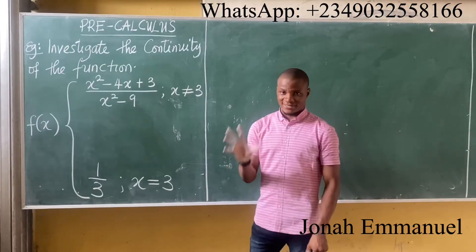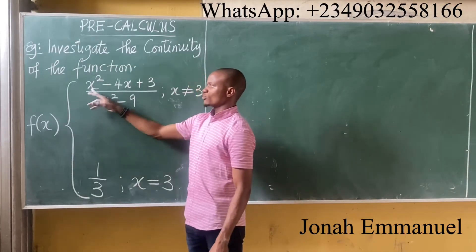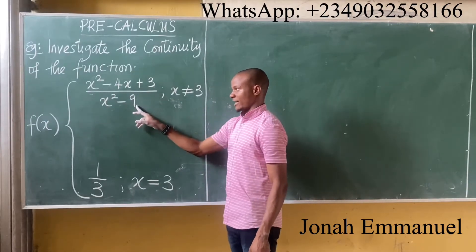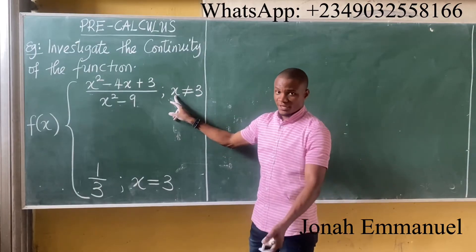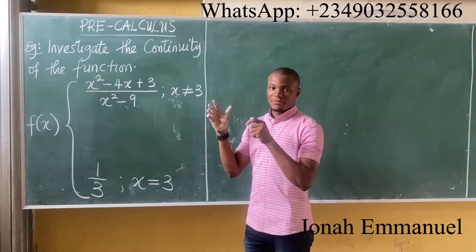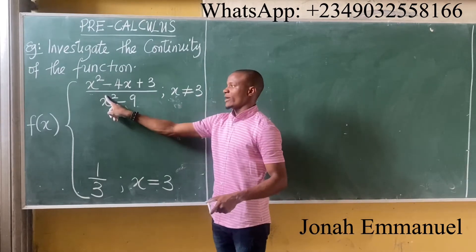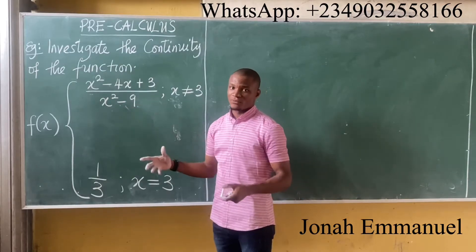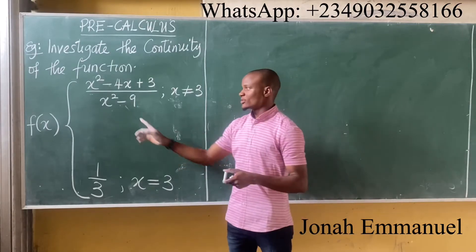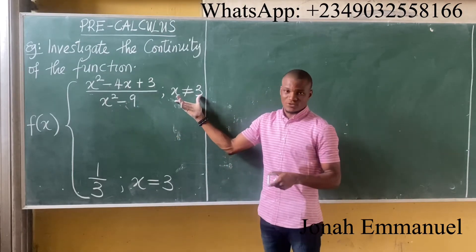For this one, f(x) equals x² minus 4x plus 3, all over x² minus 9, at x not equal to 3. This is intentional because if we put x as 3, the denominator becomes 3² minus 9, which equals 0. A function becomes indeterminate when its denominator is zero.